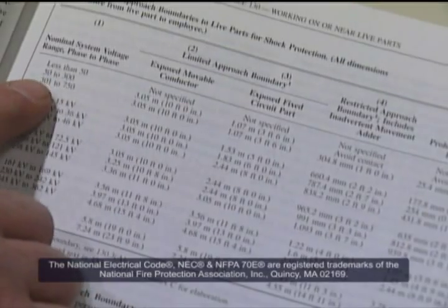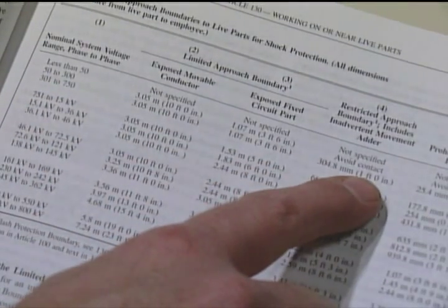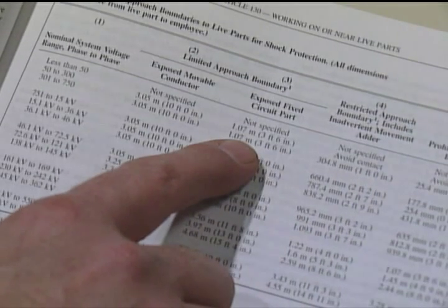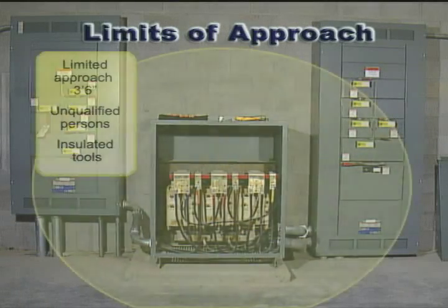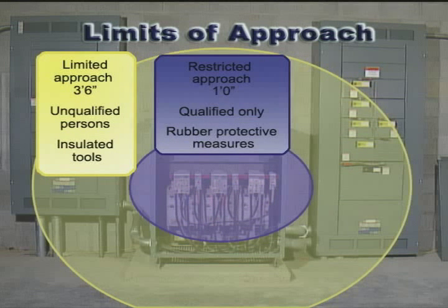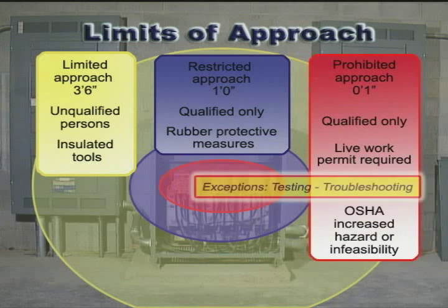NFPA 70E has created voltage tables to help determine electrical shock hazard distances for both qualified and unqualified workers from exposed, energized electrical parts. The three boundaries specified are called the limited, restricted, and prohibited approach boundaries. Specific requirements for clothing, tools, and procedures are necessary to perform tasks in each of these spherical boundaries. So a worker does not even have to be working on the energized component — just coming near it with a tool or a body part will trigger the need for these protective measures.